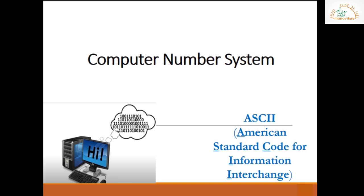In this binary form, 0 and 1 are the two digits which can be used for representing any number. The combination of 0 and 1 can be used. The maximum digits which can be used for the binary system are 0 and 1.